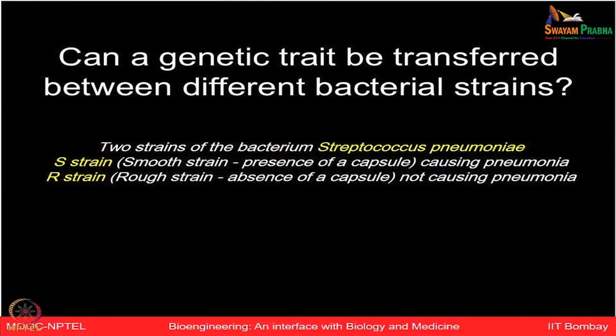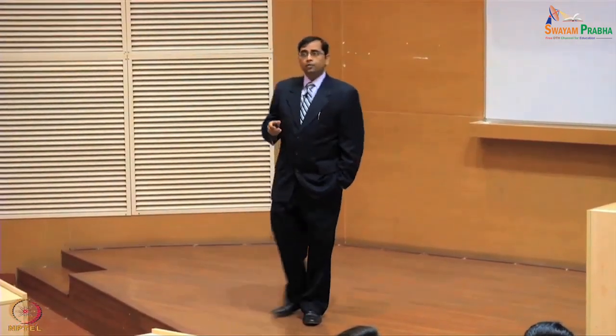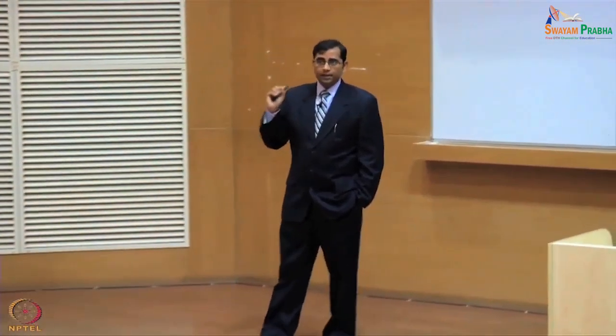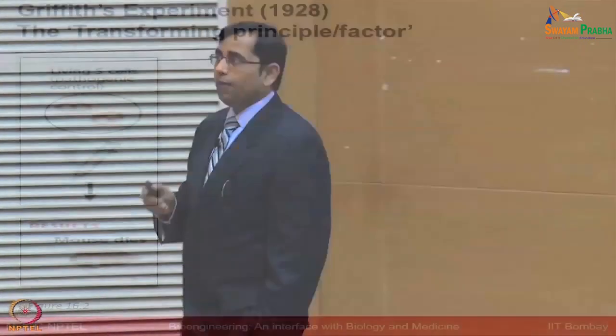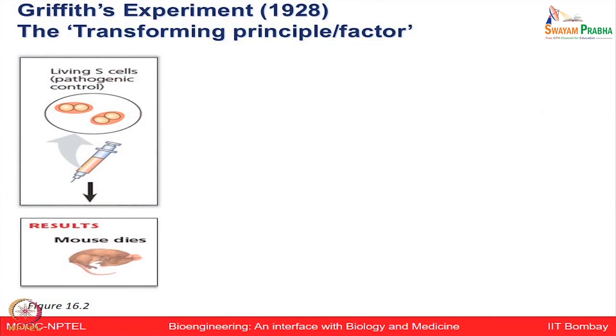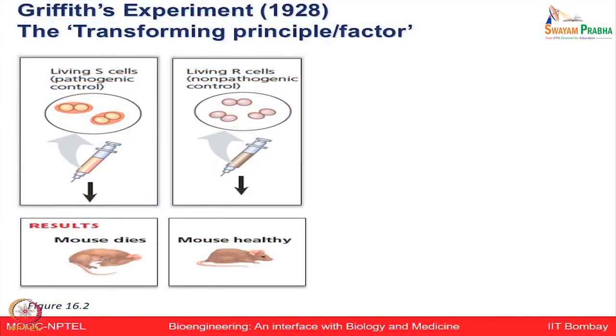Can a genetic trait be transferred into bacterial strains? There are two strains: one having a capsule is the S-strain, and one without a capsule is the R-strain. The S-strain may cause pneumonia while the R-strain does not. This experiment was done by Griffith, who proved the principle of transformation. If you inject S-capsule cells into a mouse, the mouse dies due to virulence. If you use living R-cells, they are non-pathogenic and the mouse remains healthy.